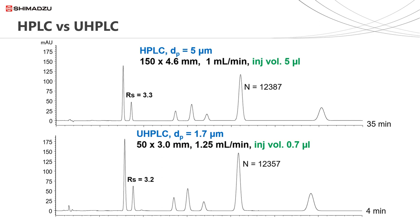The result is a much faster run time without a decrease in data quality. But before we all run out and buy short, narrow 1.7 micron columns, note the pressures involved — whereas the HPLC separation runs at 66 bar, the UHPLC separation runs at 558 bar. And it is not just the pressure: the dwell and dispersion volume of the system needs consideration, as does sample prep. But these are concepts for the next webinar.